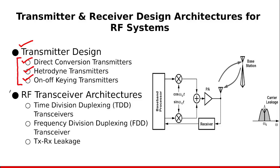After that, we are going to discuss RF transceiver architectures. A transceiver is a device in which we combine the transmitter and receiver into a single device. The types of RF transceivers we will discuss include time division duplexing (TDD) transceivers, frequency division duplexing (FDD) transceivers, and we will also discuss the problem of transmit-receive leakage in RF transceivers.